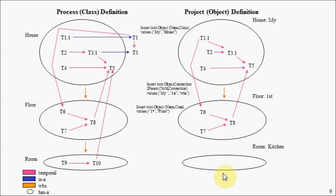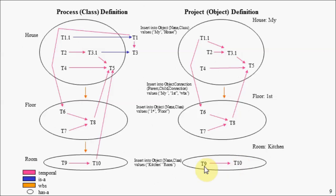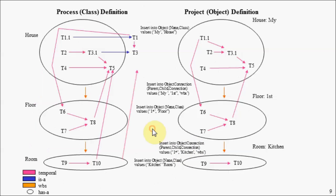Continuing, let's assume we would like to instantiate a room and call it a kitchen. We insert into our object table, calling it 'kitchen' of type 'room'. TCSQL behind the scenes will instantiate our tasks and create a temporal relationship. Let's assume we would like to connect our kitchen to our first floor — we insert into our object connection table, and TCSQL behind the scenes will connect our tasks that cross entity boundaries.